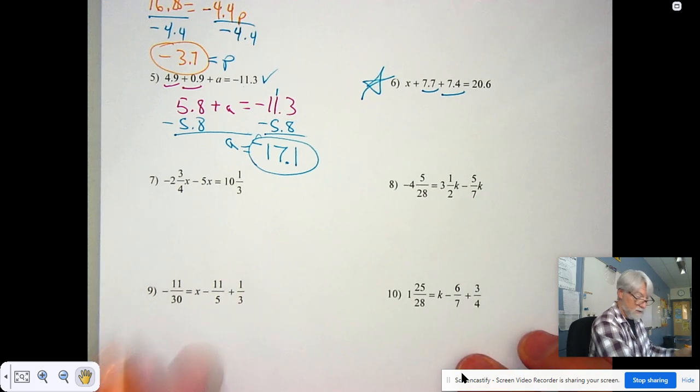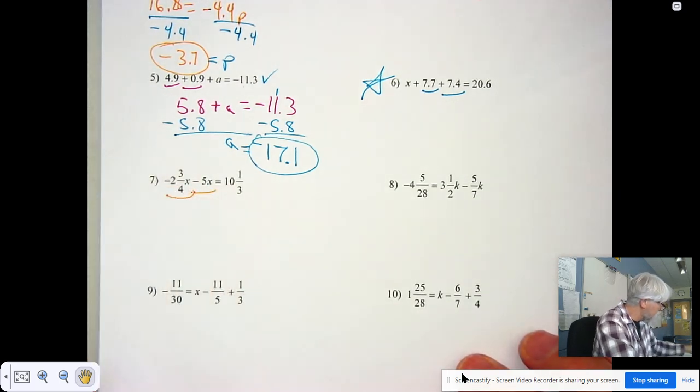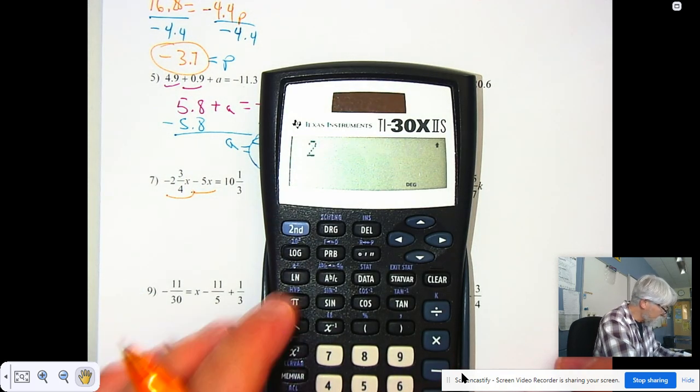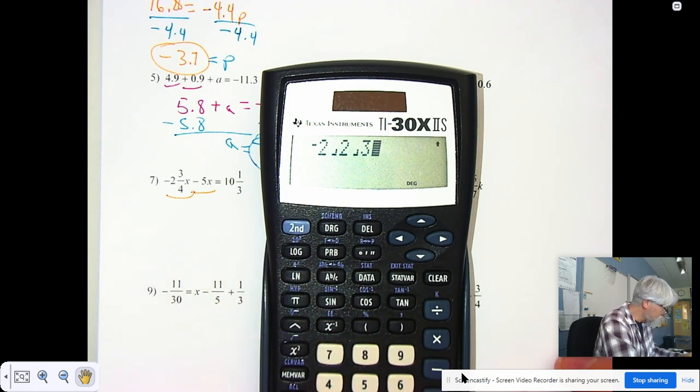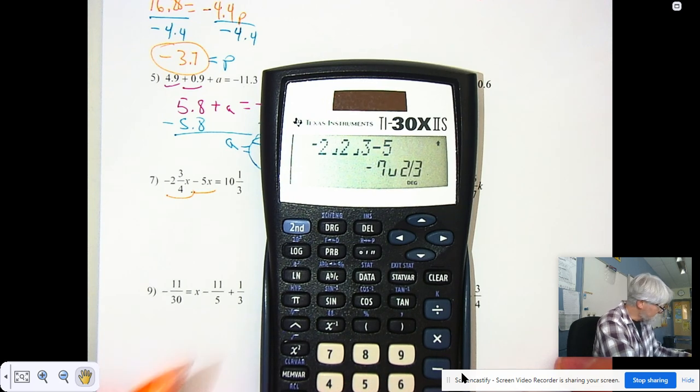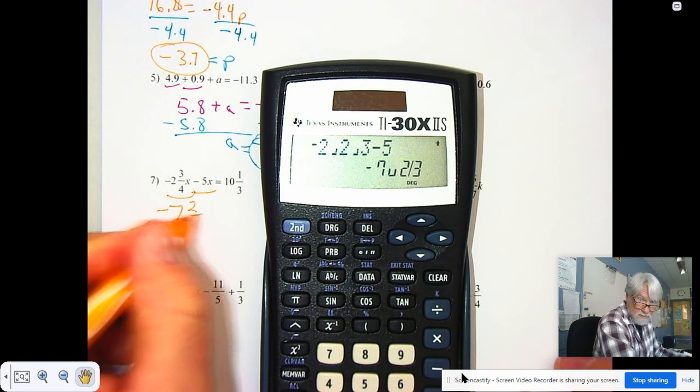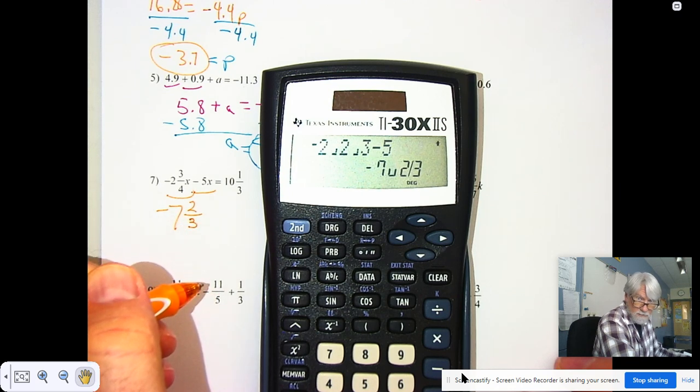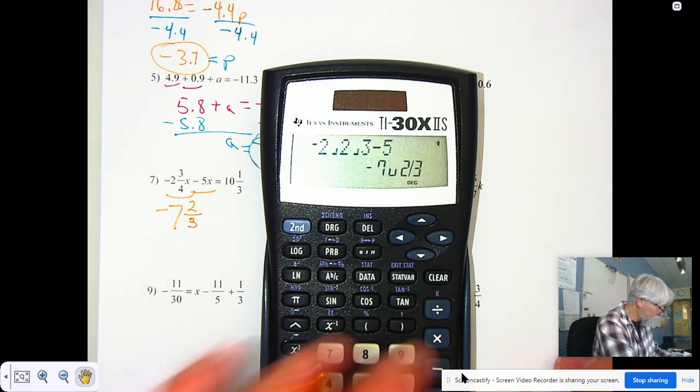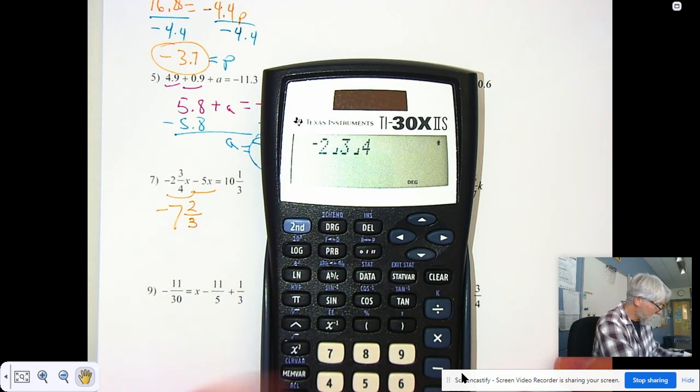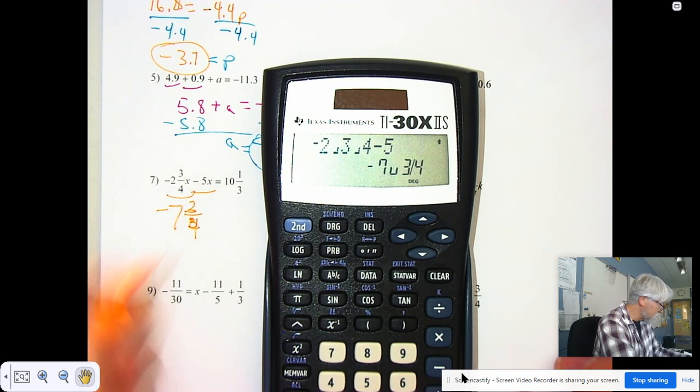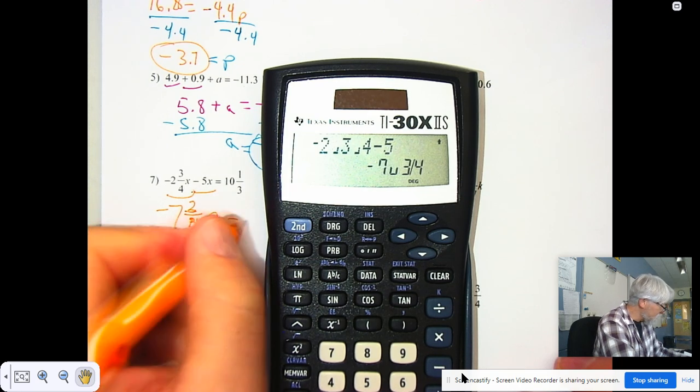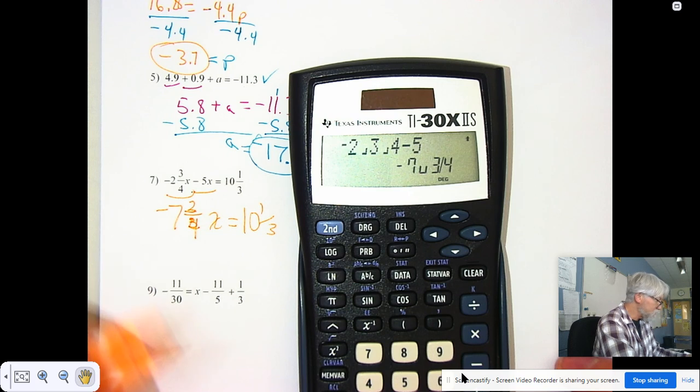With the fractions, again, combine your like terms. Take your coefficients. Negative 2 and 3 fourths minus 5. Oh, I was punching the wrong numbers again. Holy cow. Let's clear this. Negative 2 and 3 fourths minus 5. Probably do that in your head better than what I just did. And you get negative 7 and 3 fourths X. That's going to be equal to 10 and 1 third. That's your combining like terms.